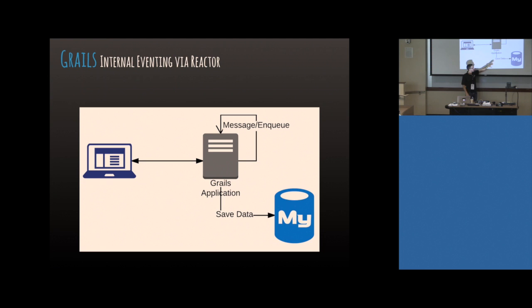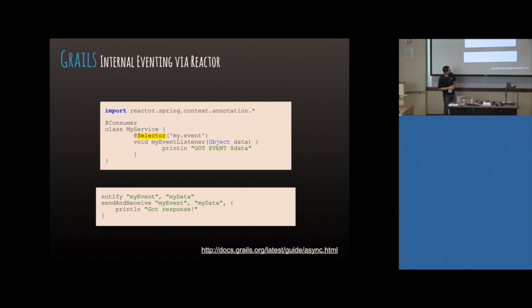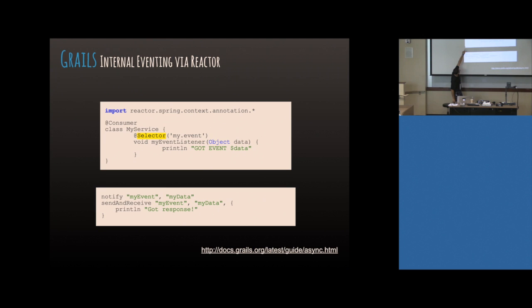Here's some simple code from the Grails async documentation on how to make these things work. You just use the notify event, which is the events trait that comes on all services and controllers. You say fire off to some topic namespace with some data. As long as your service is annotated with a consumer and you have a selector on there, you can consume the event.